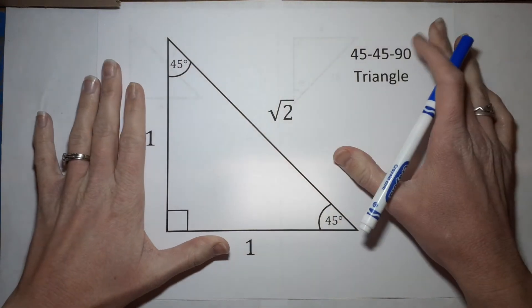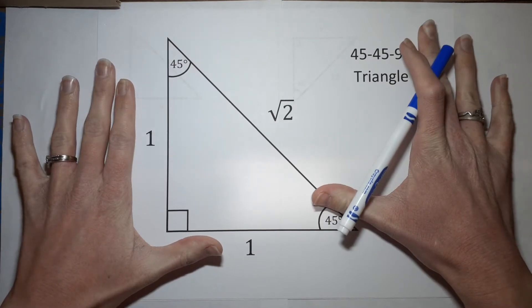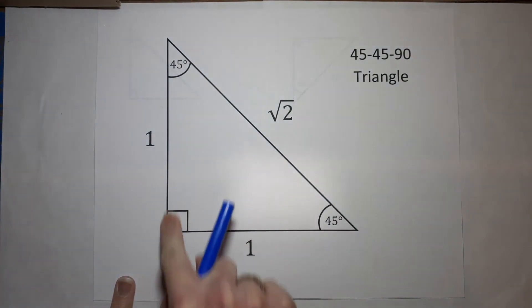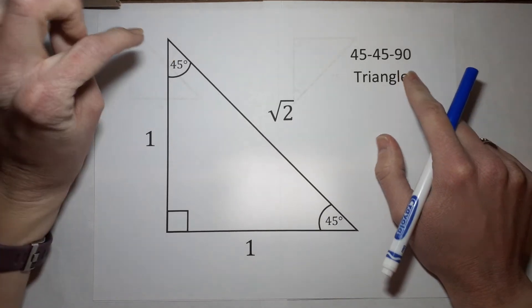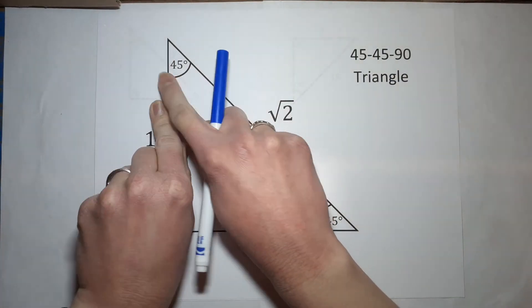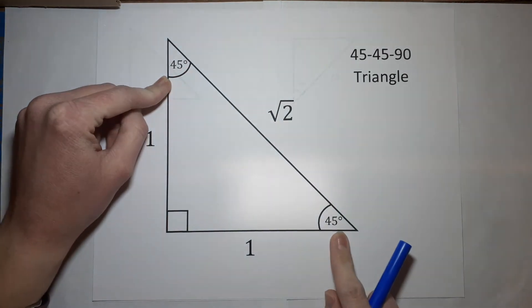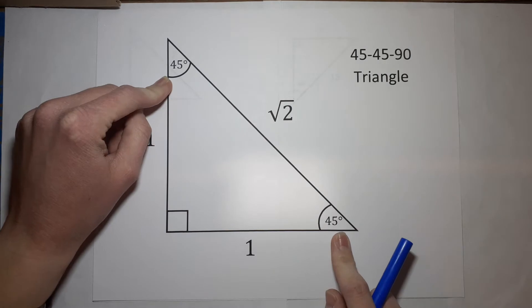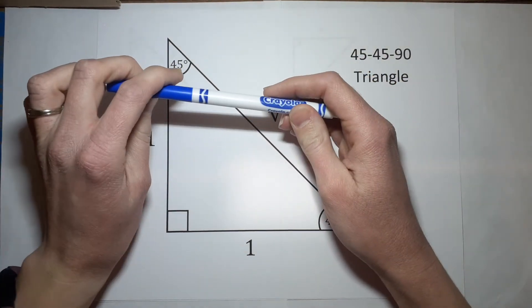45-45-90 triangle. These are special right triangles. So our right triangle, we've got our 90 degrees here. That's where that 90 comes from. And then if one side is 45 degrees, one angle I should say, then we know the other one is. Why do we know that? Because the angles of a triangle always add to 180 degrees.